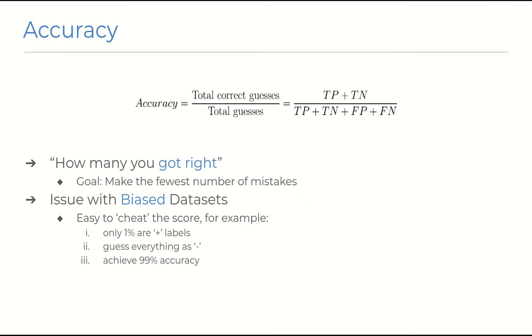Accuracy essentially tells us how many answers we got right out of all the guesses we've made, and notably, this is without any regard for whether the guesses were about positive or negative labels.